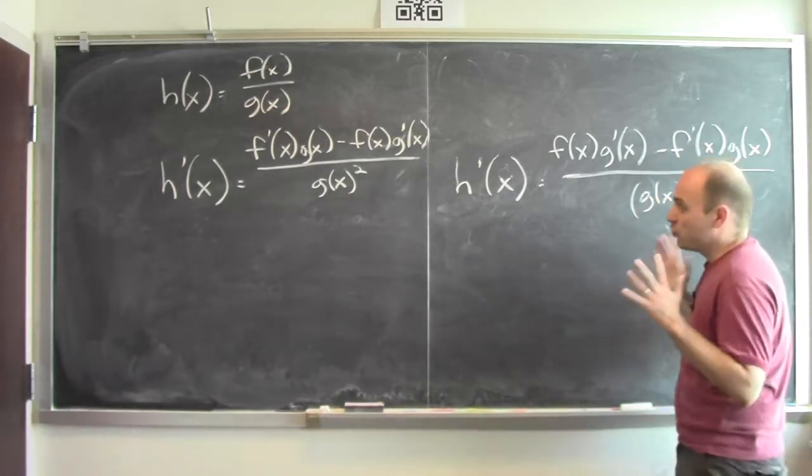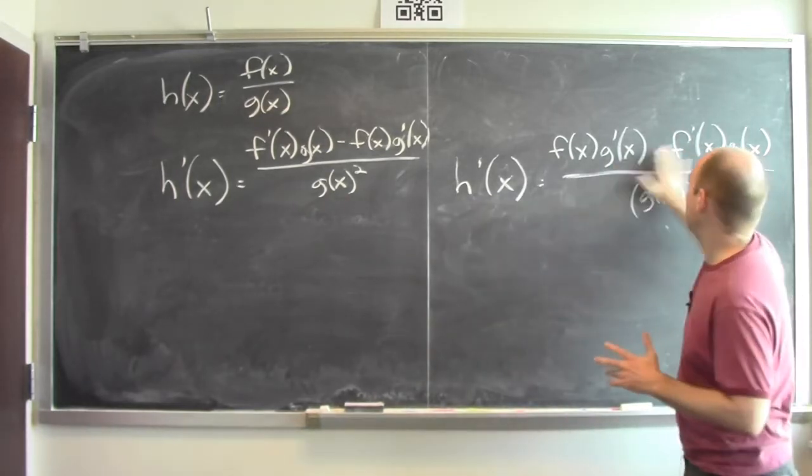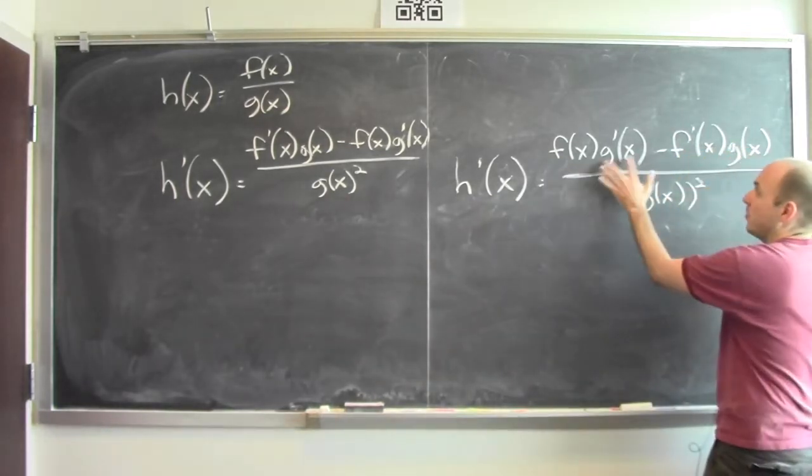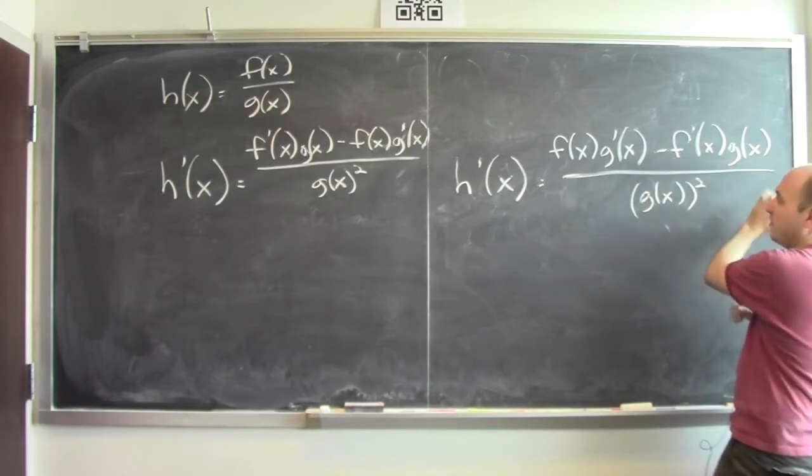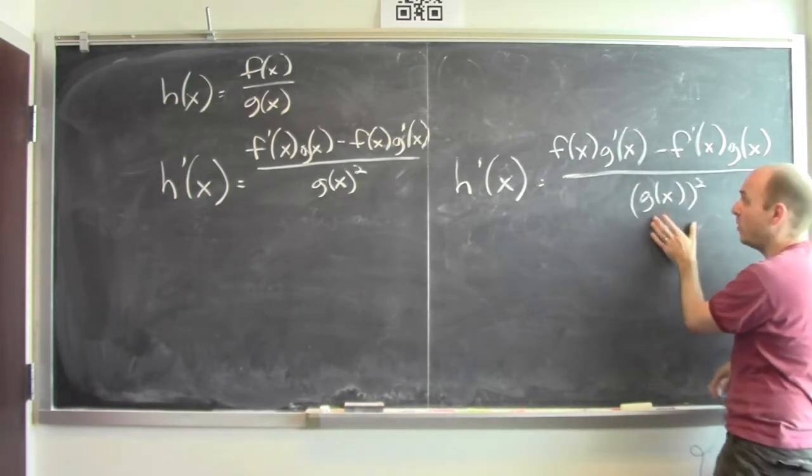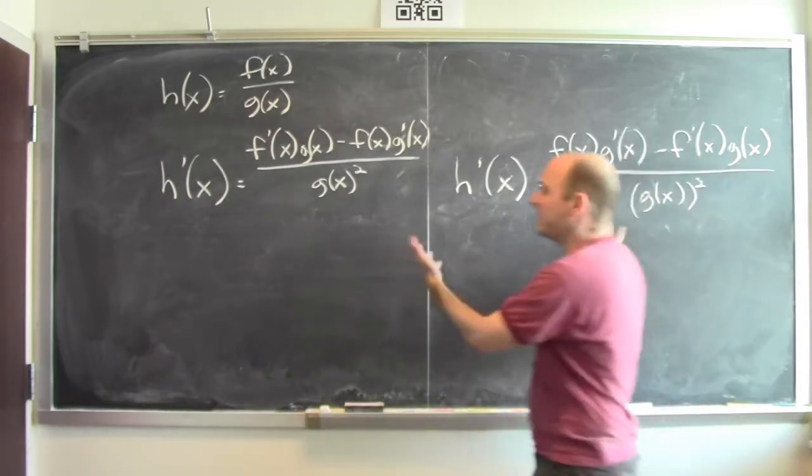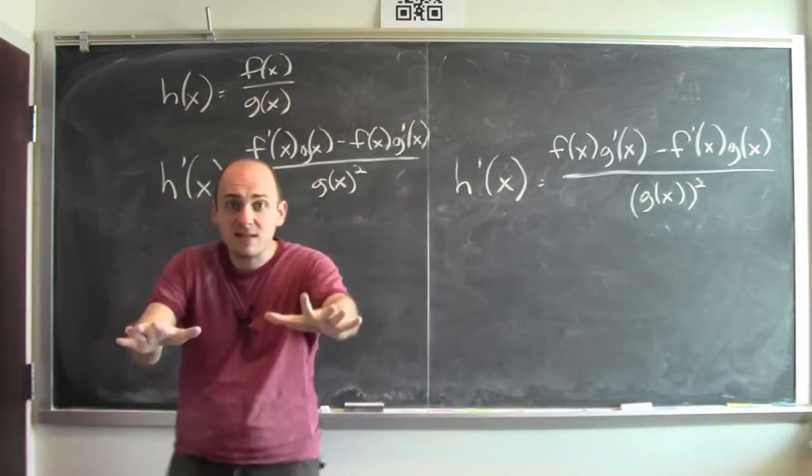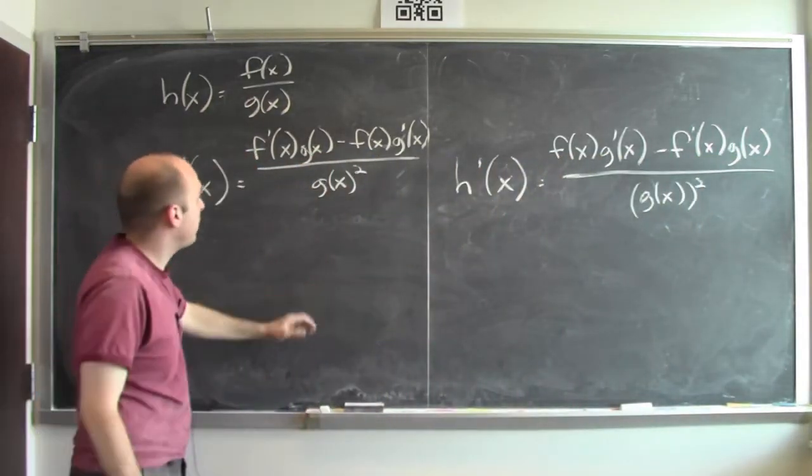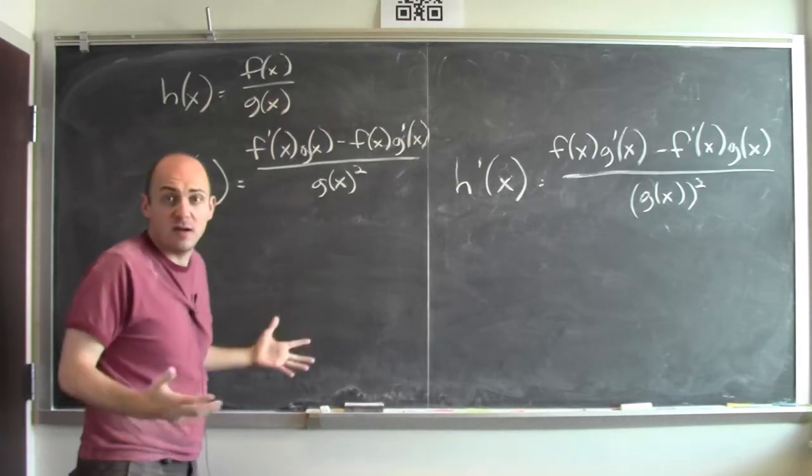Now you might be confused. You might be tricked into thinking that the derivative of h is actually this: f times the derivative of g minus the derivative of f times g, over g squared. Are these the same? There's lots in common between these two expressions. They both have g(x) squared in the denominator, and the numerator is both a difference of two things.